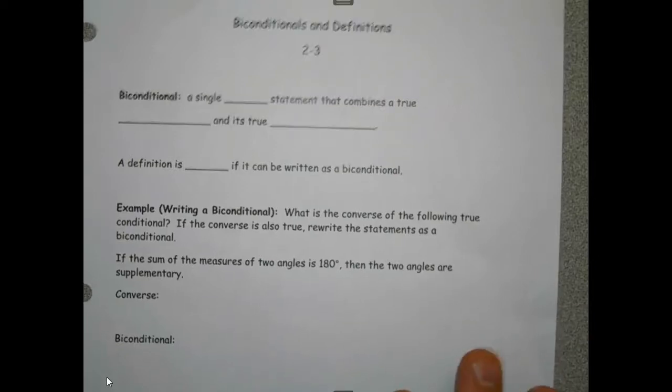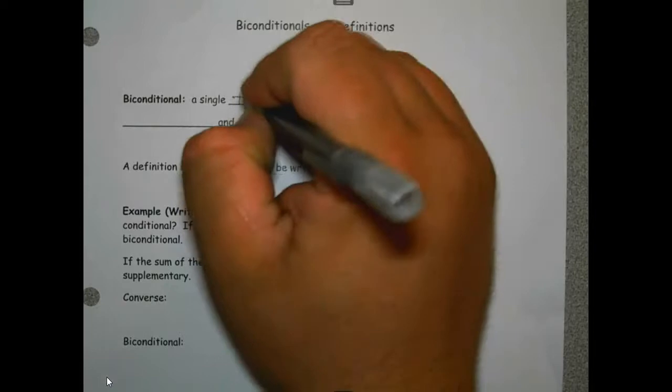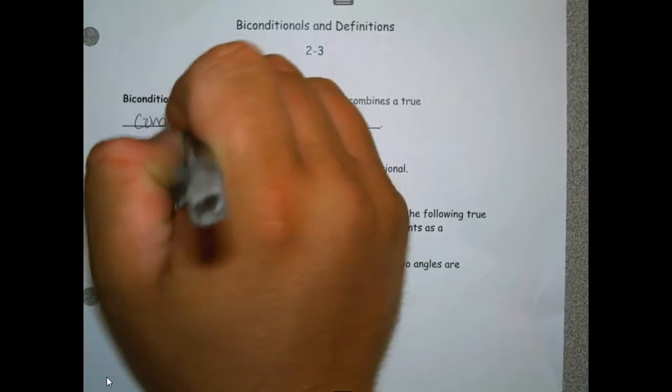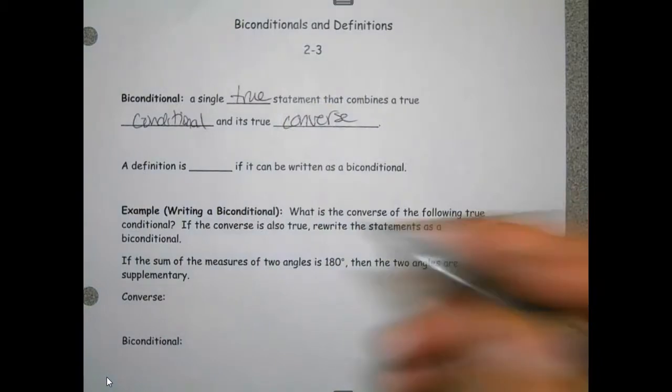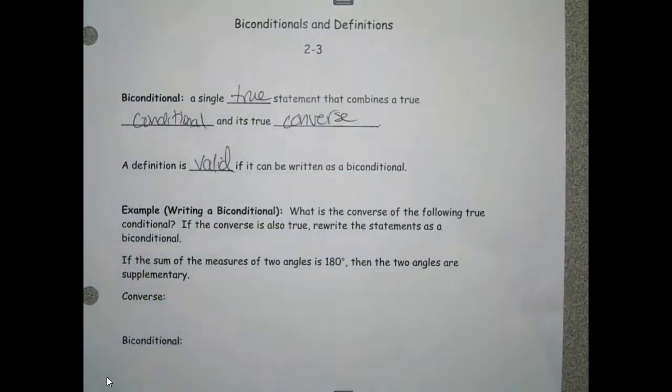Okay, so we're on unit two lesson three. A biconditional is a single true statement that combines a true conditional and its true converse. A definition is valid if it can be written as a biconditional, so something can be written as a biconditional if it's true all the time.